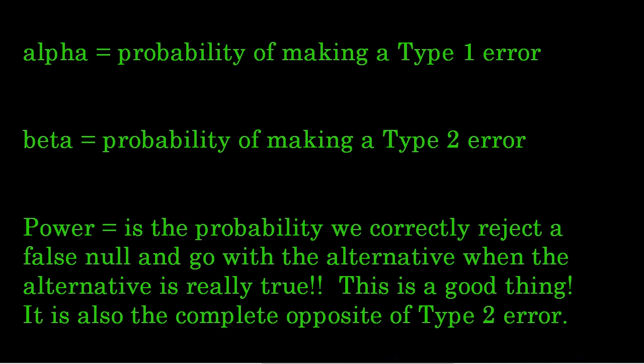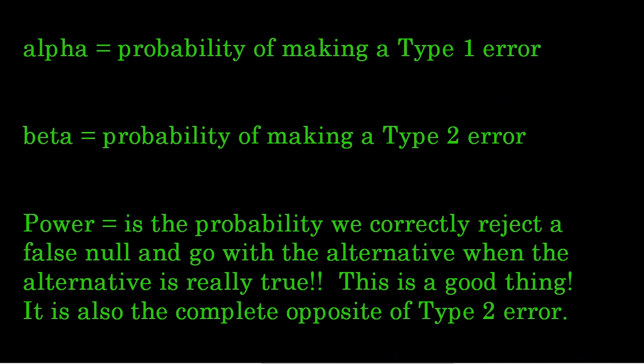Now, just a little bit more about this error. Alpha is the probability of making a type 1 error. Now, that is the same alpha that we use for our level of significance. So when you choose an alpha level of, say, 0.01 for a significance test, you are basically making the decision that there is a 1% probability of a type 1 error being made. Now, did you make it? Did you not make it? Don't worry about that. That's just the probability of a type 1 error being made.